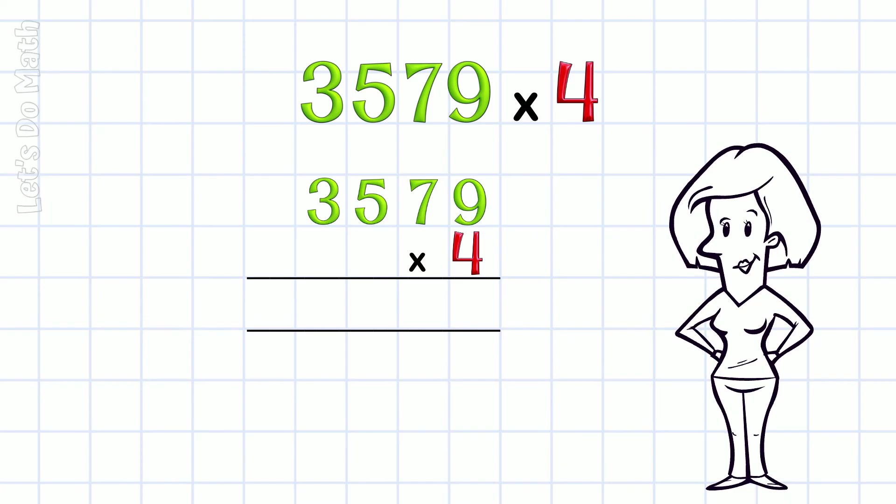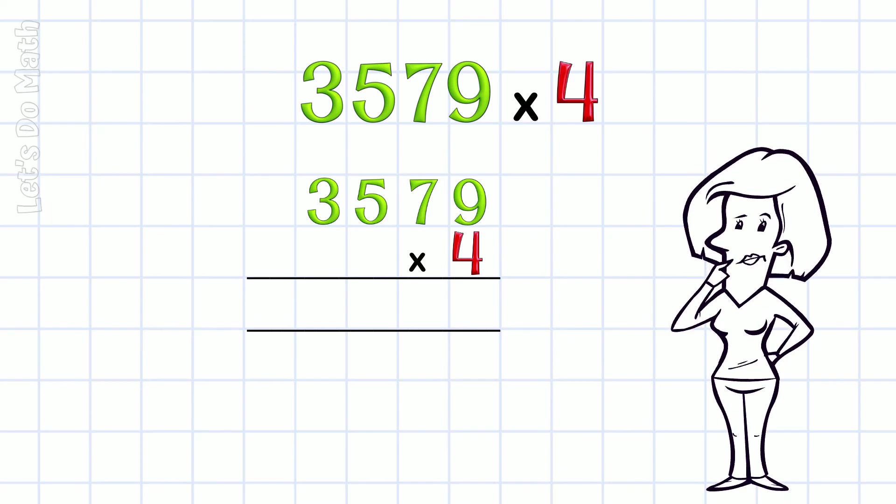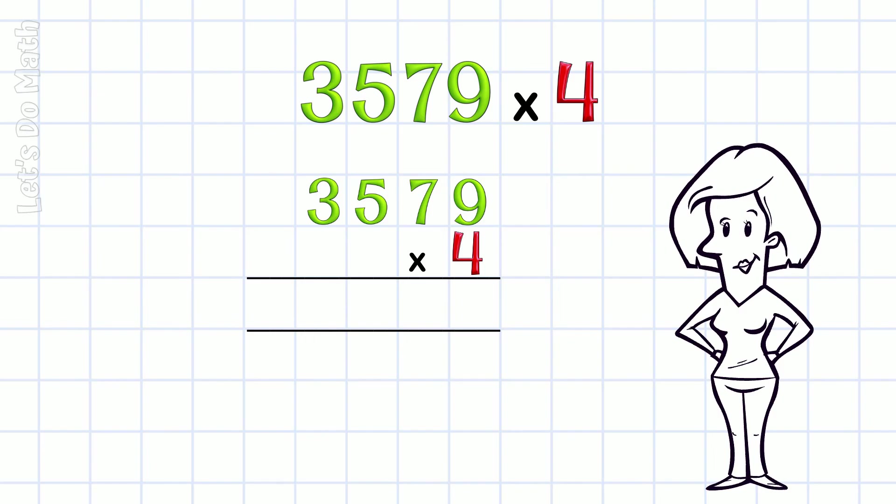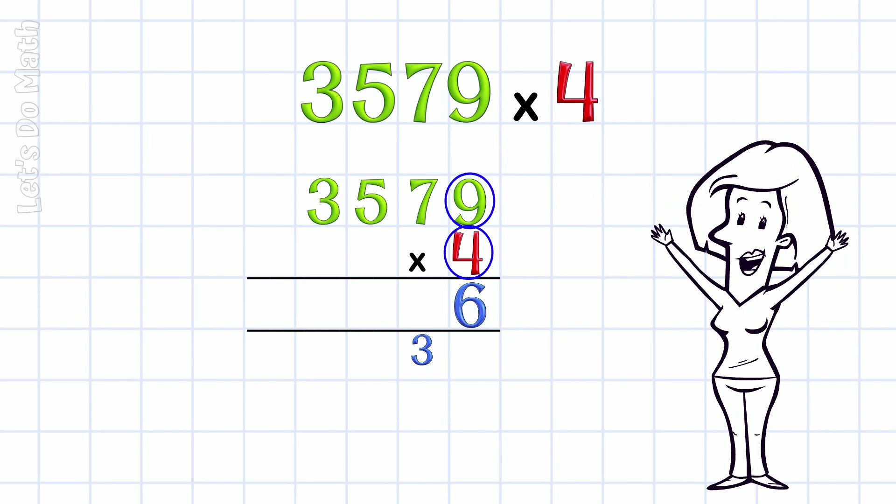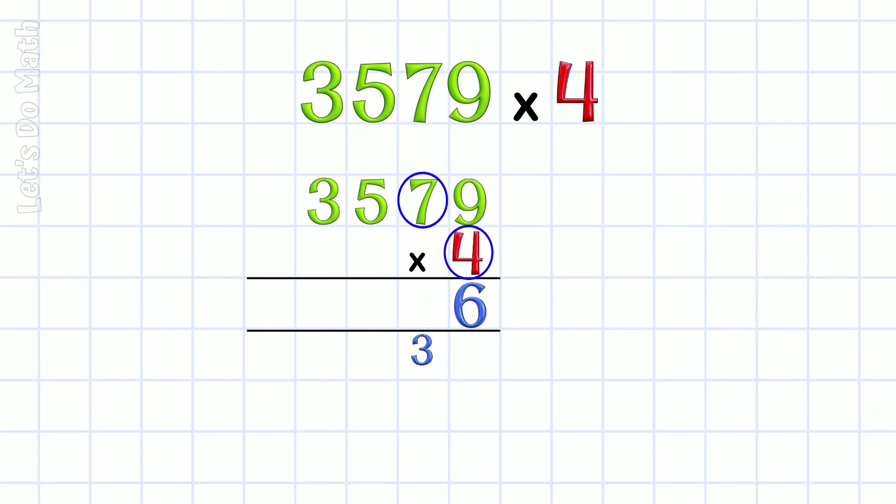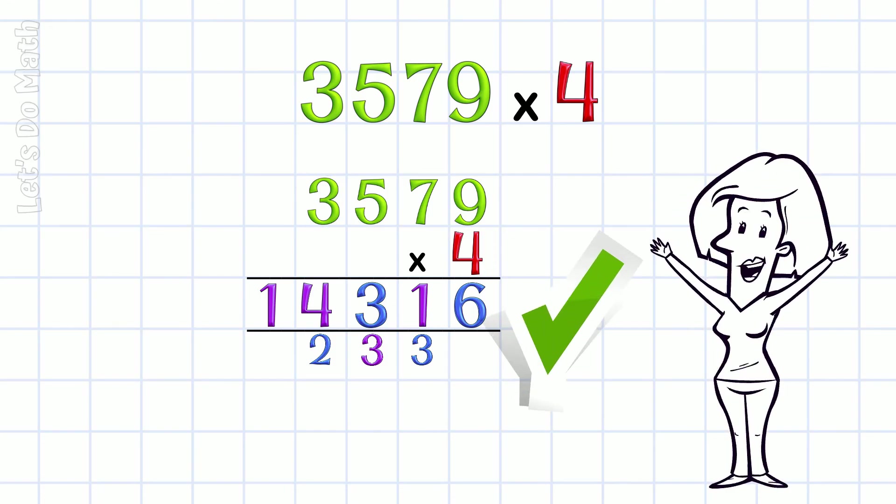When we learn our tables, some tables do seem easier to us than others. But not to worry! You can read this problem as either 9 × 4 or 4 × 9. The answer is the same: 36! Now, we've got 7 × 4, or if you prefer, 4 × 7. That's 28, plus that 3 is 31. 5 × 4, or 4 × 5, is 20, plus the 3 is 23. And 3 × 4 is 12, plus this 2 is 14. 14,316.